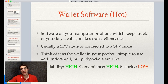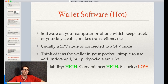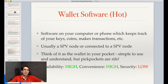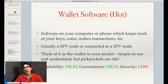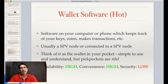Perhaps the hottest and least secure kind of wallet is having software on your computer or phone which directly keeps track of your keys, makes transactions, and stores your coins. This is generally considered a bad idea. While availability is high and convenience is very high since it's immediately available on your computer, security is extremely low — if anyone gets onto your computer and you're storing this data in an unencrypted way, they can get your private keys and have access to all of your Bitcoin.